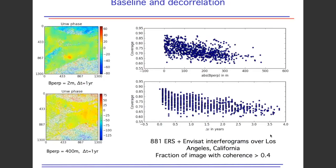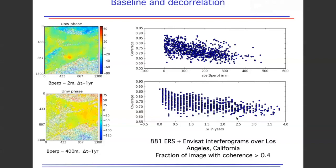Another issue we discussed in theory was decorrelation. Here's a plot of spatial coverage — the number of pixels with coherence greater than 0.4 over scenes in LA, which is a fairly urban and well-correlated area. You can see that spatial coverage decreases as temporal baseline increases, and also with increasing perpendicular baseline. For Sentinel-1 and NISAR, baseline is less of a factor since we maintain a tight orbit tube, so temporal separation is what matters most.